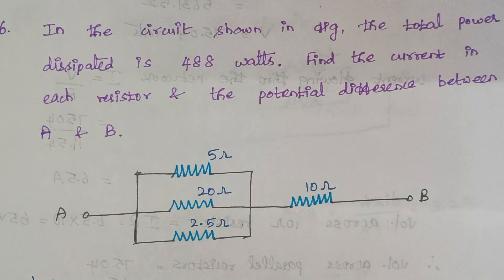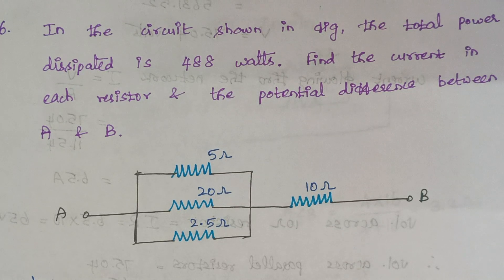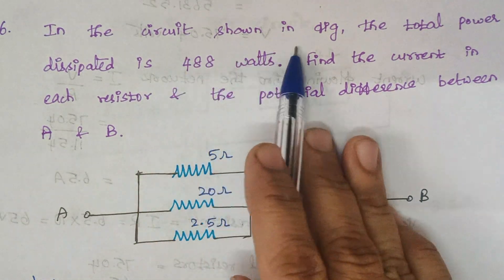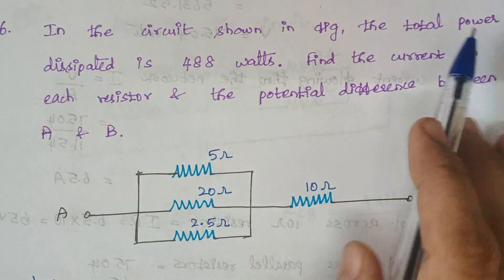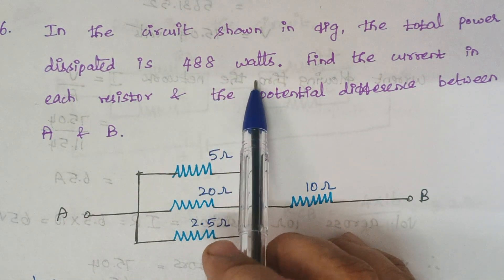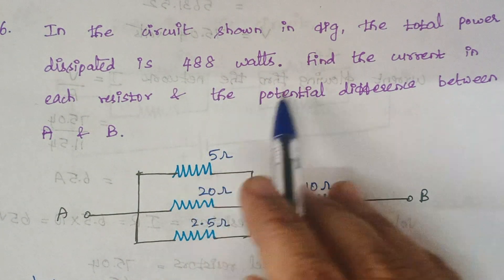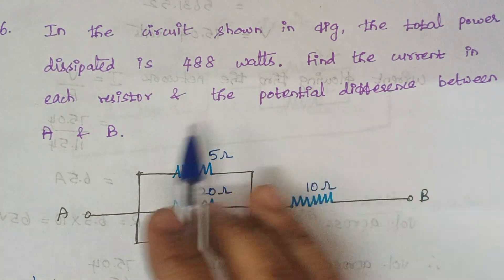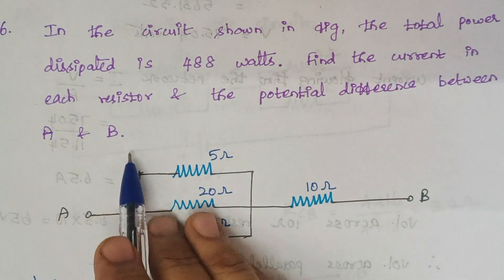Hello viewers, I am Kausalya. Today we are going to discuss about the problems related to KCL and KVL. Here the problem is: in the circuit shown in the figure, the total power dissipated is 488 watts. Find the current in each resistor and the potential difference between the points A and B.